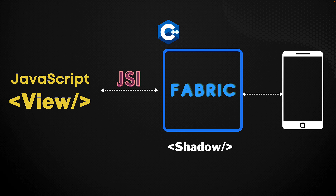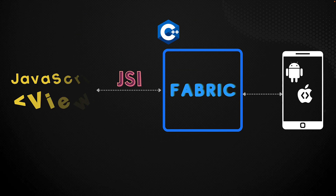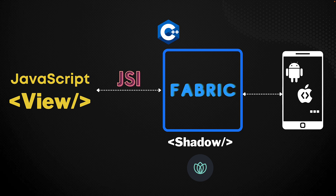A key part of styling with CSS — and some would argue the critical part — is calculating the layout. React Native has a solution for that in the form of Yoga. At its core, it is a layout engine written in C++ designed specifically to do efficient calculations for the Flexbox layout system. And since it is written in C++, it gets neatly integrated into the Fabric renderer within React Native.